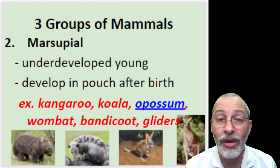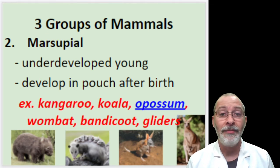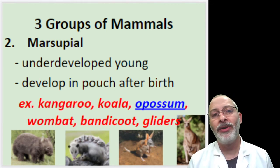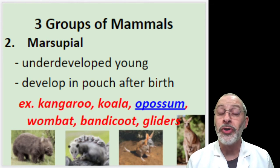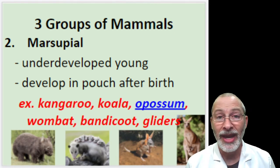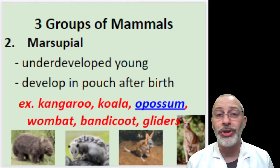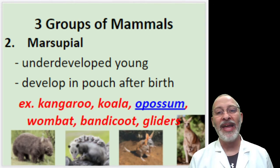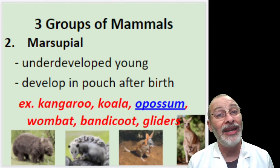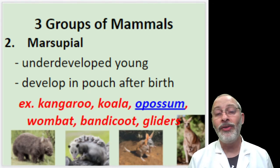The most famous marsupial is the kangaroo. There are a variety of kangaroo species whose young develop in the mother's pouch, finally emerging when old enough to hop around on their own. We do have a marsupial here in North America — the possum (the O is silent). Kangaroos, koalas — which are not bears, because bears are not marsupials — possums, wombats, bandicoots, and sugar gliders are all examples of marsupials.